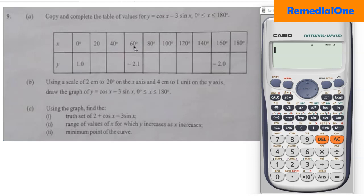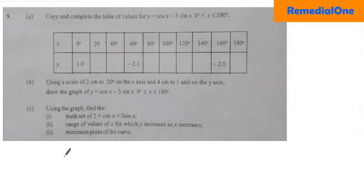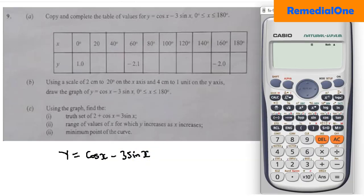For copy and complete, we are going to use a calculator to complete the table. You have the FS99-1 calculator which is allowed — there are a lot of videos about how to use it. You have been given y equals cos x minus 3 sin x, so wherever we see x we replace it with the x value. Grab your calculator and make sure it is in degree mode.